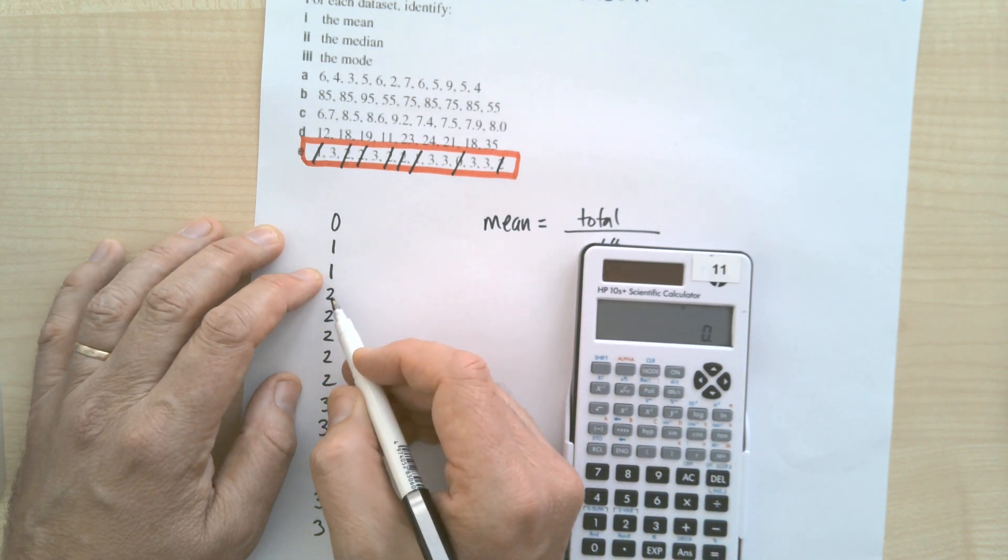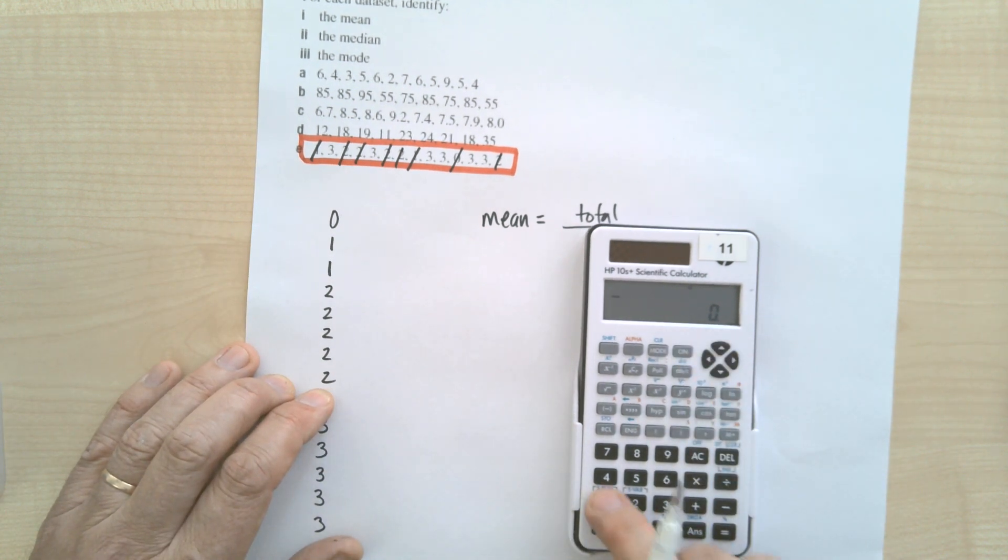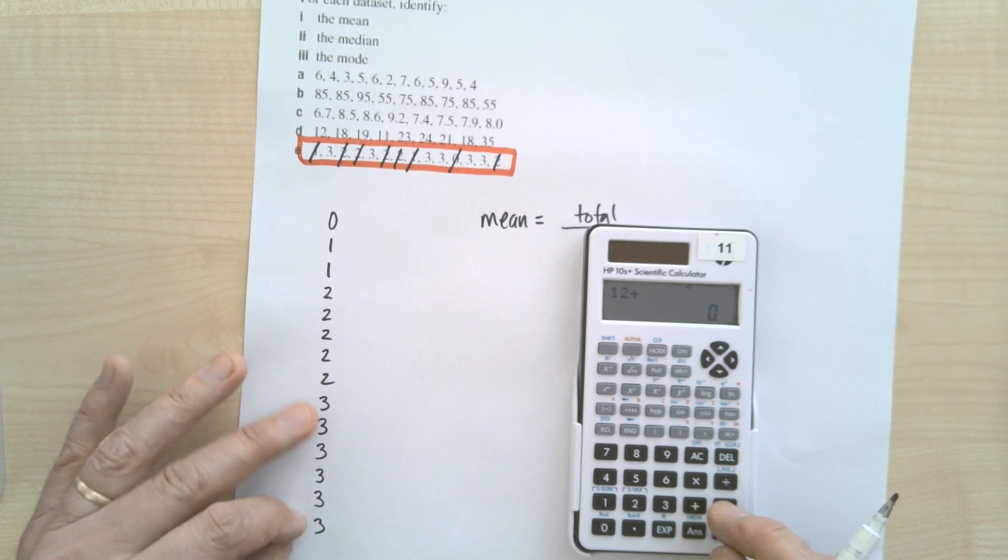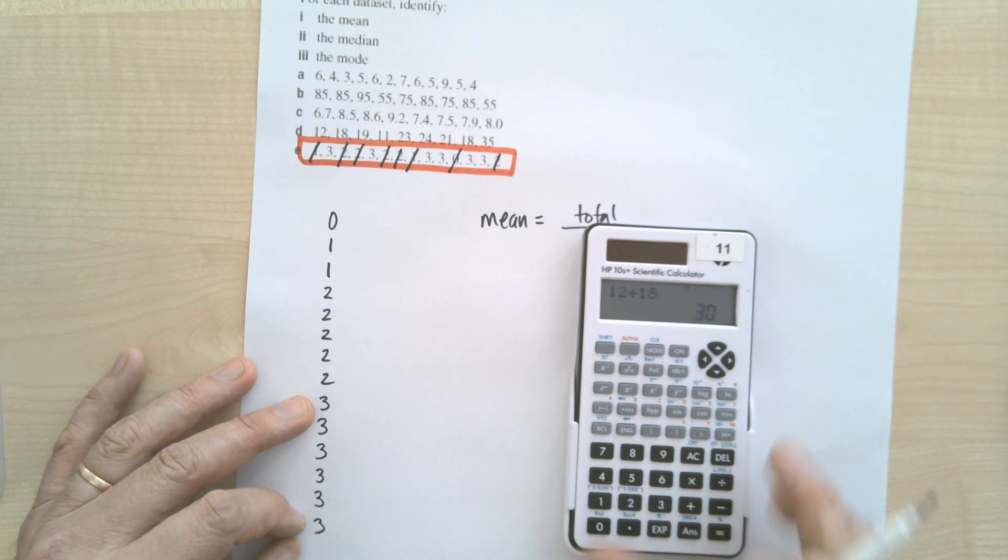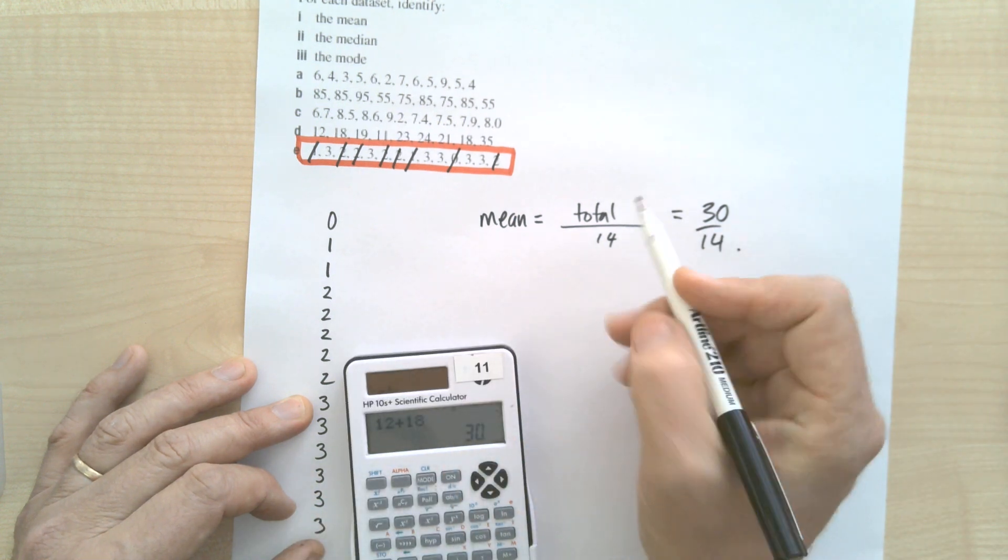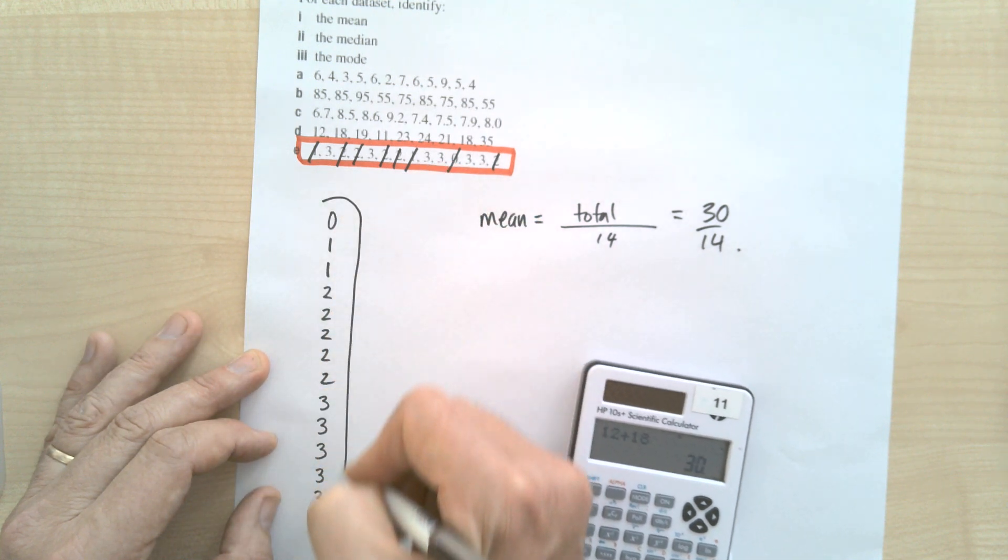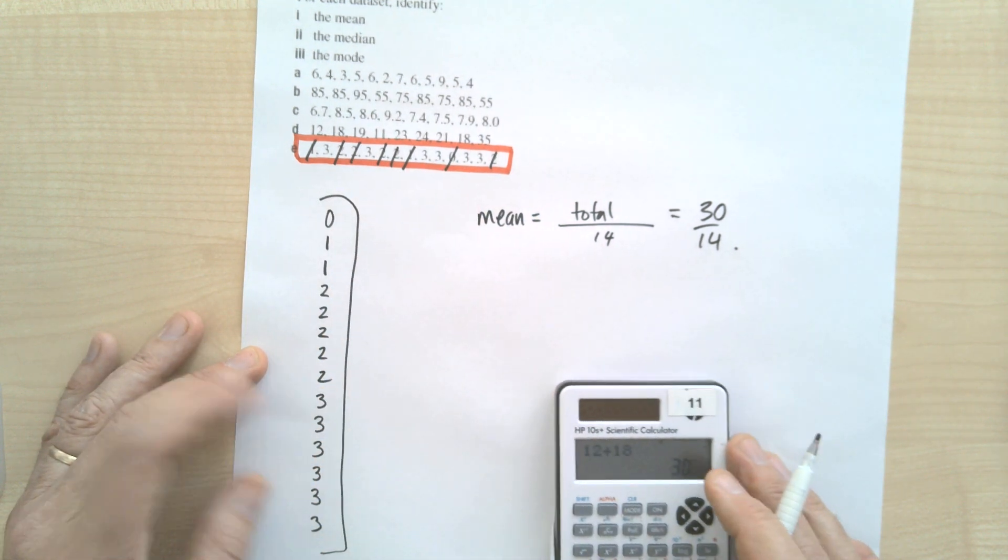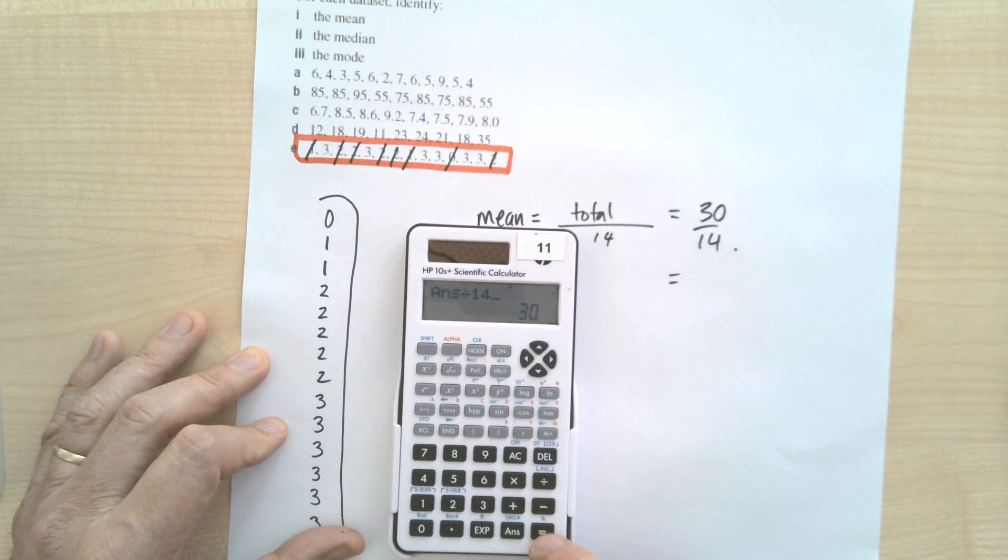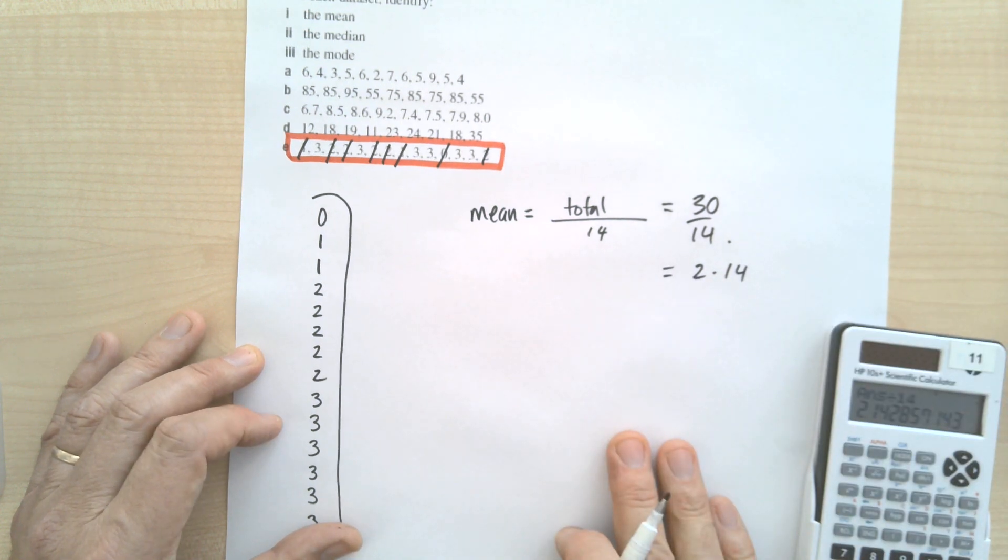So I've got six lots of two there. So that's twelve. Twelve plus six lots of three which is eighteen. So that's thirty over fourteen. So the total is thirty. Adding all these up gives me thirty, and there are fourteen of them. So I just go thirty divided by fourteen. Two point one four. So that is my mean.